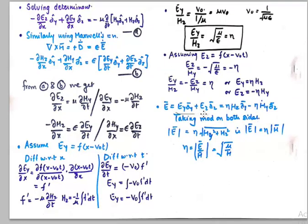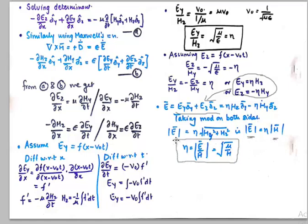In the last step, the E vector is constituted by E_Y and E_Z components. Substituting these values: E⃗ = η·H_Z â_Y − η·H_Y â_Z. Taking the modulus on both sides gives |E| = η·|H|. This is a very important relationship used often in numericals. So η = |E|/|H| = √(μ/ε).